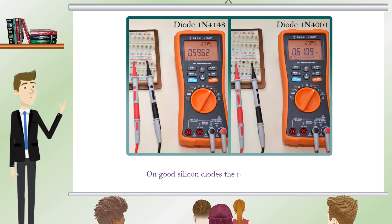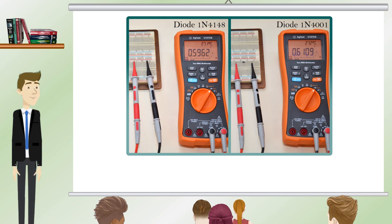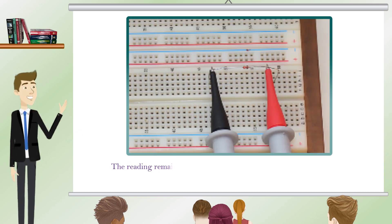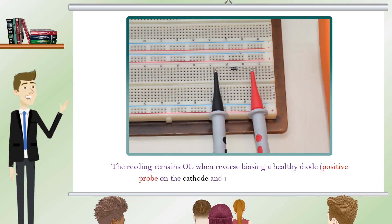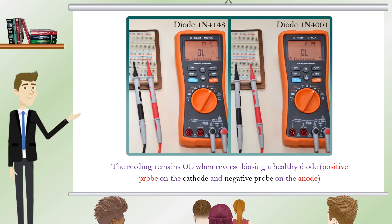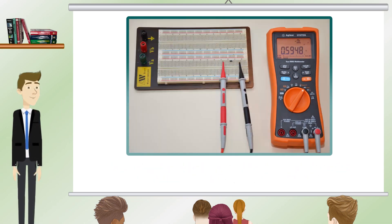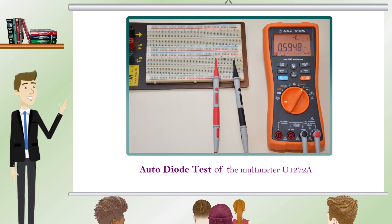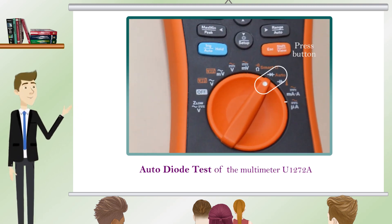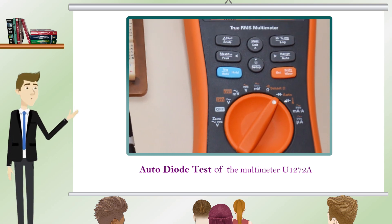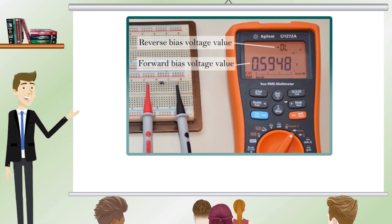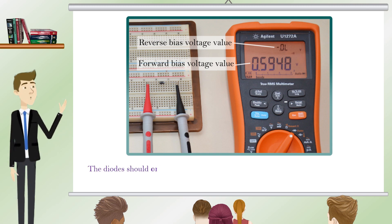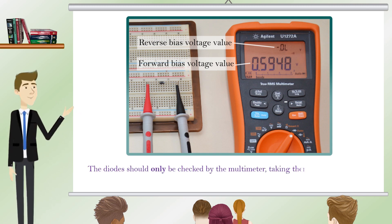On good silicon diodes the reading is about 0.6 volts. The reading remains OL when reverse biasing a healthy diode, with the positive probe on the cathode and the negative probe on the anode. Using the multimeter's auto diode function, the forward bias and reverse bias tests are done simultaneously — you do not need to change the position of the probes. Diodes should only be checked by the multimeter after taking them out of the circuit.